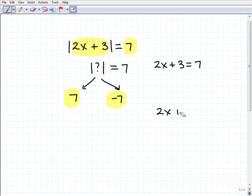And then all we have to do is simply solve for x and then we've solved this absolute value equation. So let's go through the steps here, we get 2x equals 4, x equals 2, so that's one solution. And then here we get 2x is equal to negative 10, x is equal to negative 5.